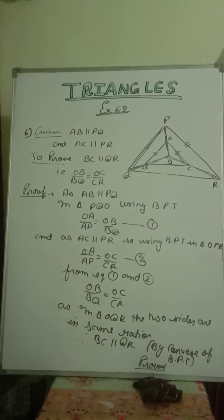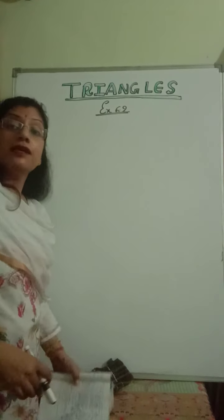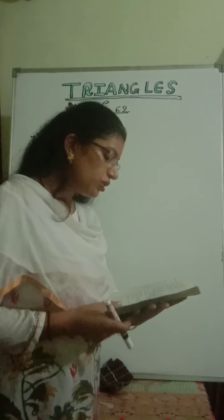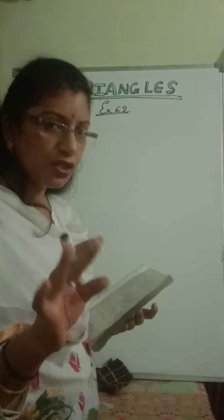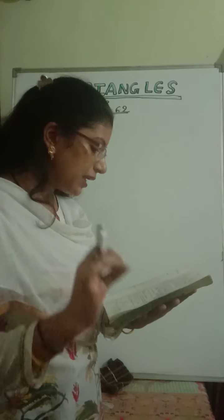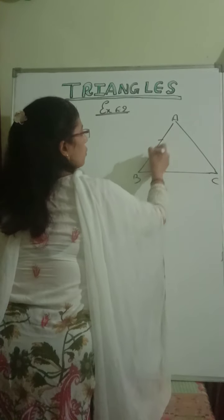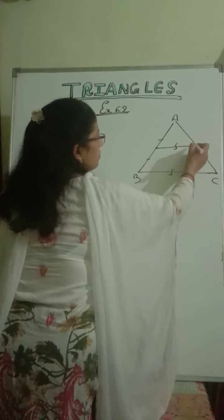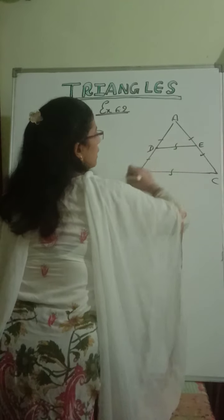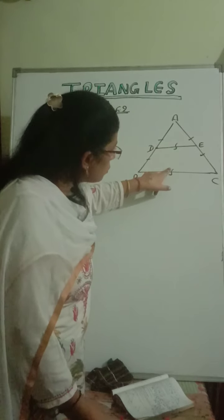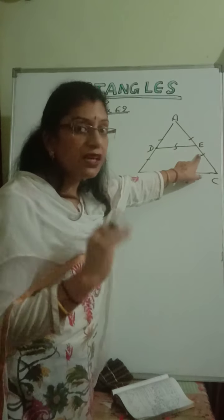Now let us start question number 7. Using theorem 6.1, that is the basic proportionality theorem, prove that the line drawn through the midpoint of one side of a triangle, parallel to another side, bisects the third side. You have done this question in 9th class also — it is the midpoint theorem. But here we have to use the basic proportionality theorem.